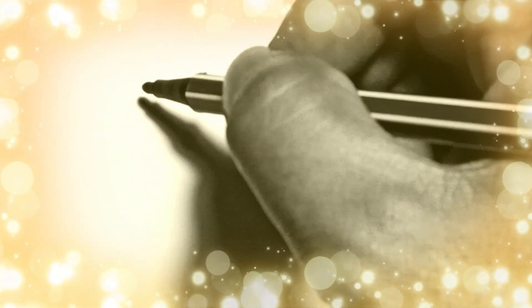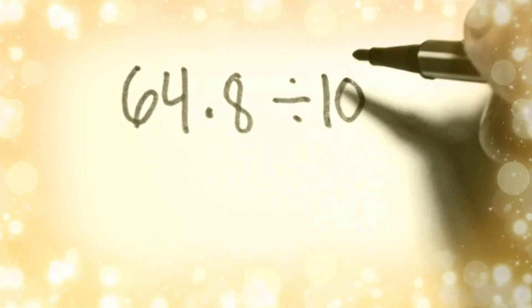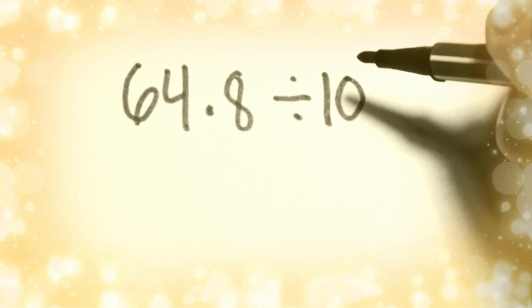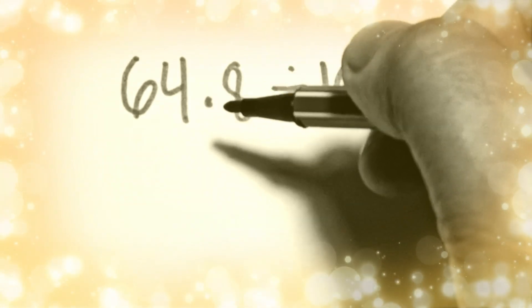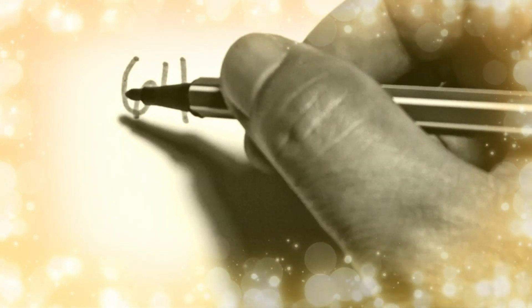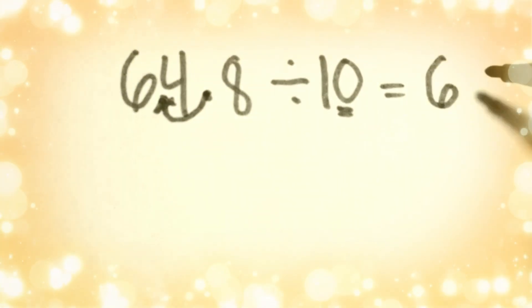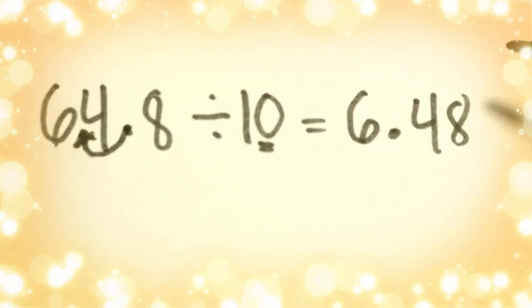In dividing decimal numbers by 10, for example if you have 64.8 divided by 10, division of decimal numbers by 10 is almost the same as division of whole numbers by 10. You have one zero, so your decimal point is already here. All you have to do is move your decimal point going to the left one time, so your answer will become 6.48.